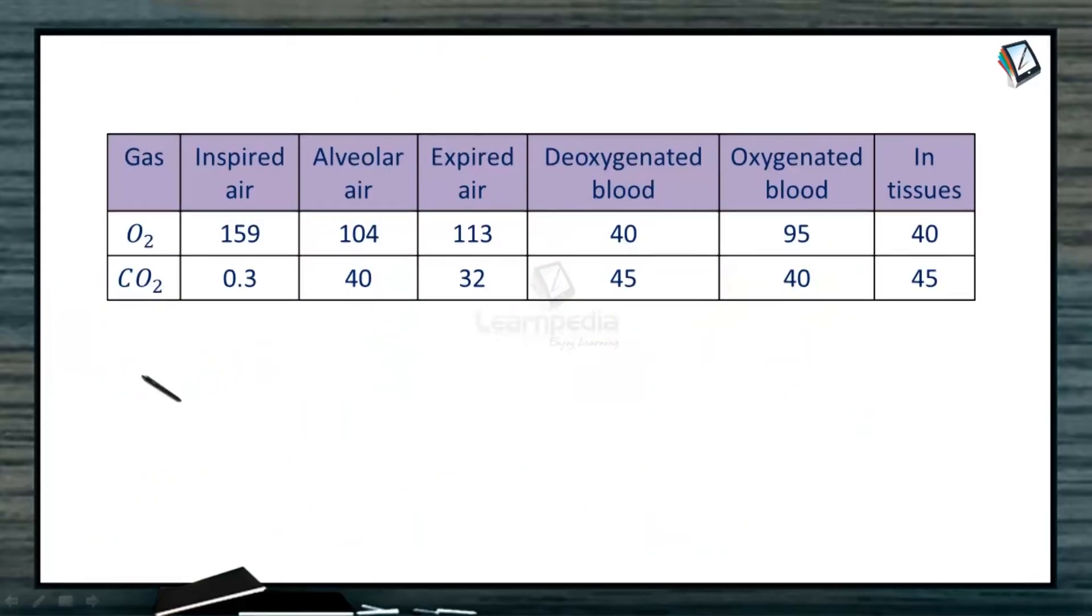You can check in this table. The inspired air has O2 159. In alveoli, it's 104. In deoxygenated blood, it's 40. In oxygenated blood, it's 95. In tissues, it's 40. The air which is entering from atmosphere to alveoli, and now from 104, air will reach to deoxygenated blood which will become oxygenated up to 95. And from the oxygenated blood, when blood gets applied to tissue cells, it will release oxygen in tissues. Everywhere oxygen is moving from high pressure to low pressure.